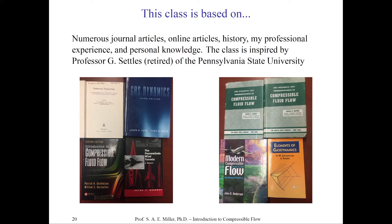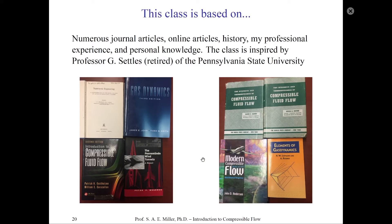The cheapest book, often used in grad school and coming out of Caltech, is by Liepmann and Roshko — a Dover book, usually under $20 in paperback, and almost a must-have for graduate students. For undergraduate students, I would recommend either buying the more expensive Anderson book, the moderate Gas Dynamics book, or the compressible fluid book. Some books have missing material, and if anything is missing, I've uploaded the needed supplementary material to the class website. You're welcome to buy one of these three books.